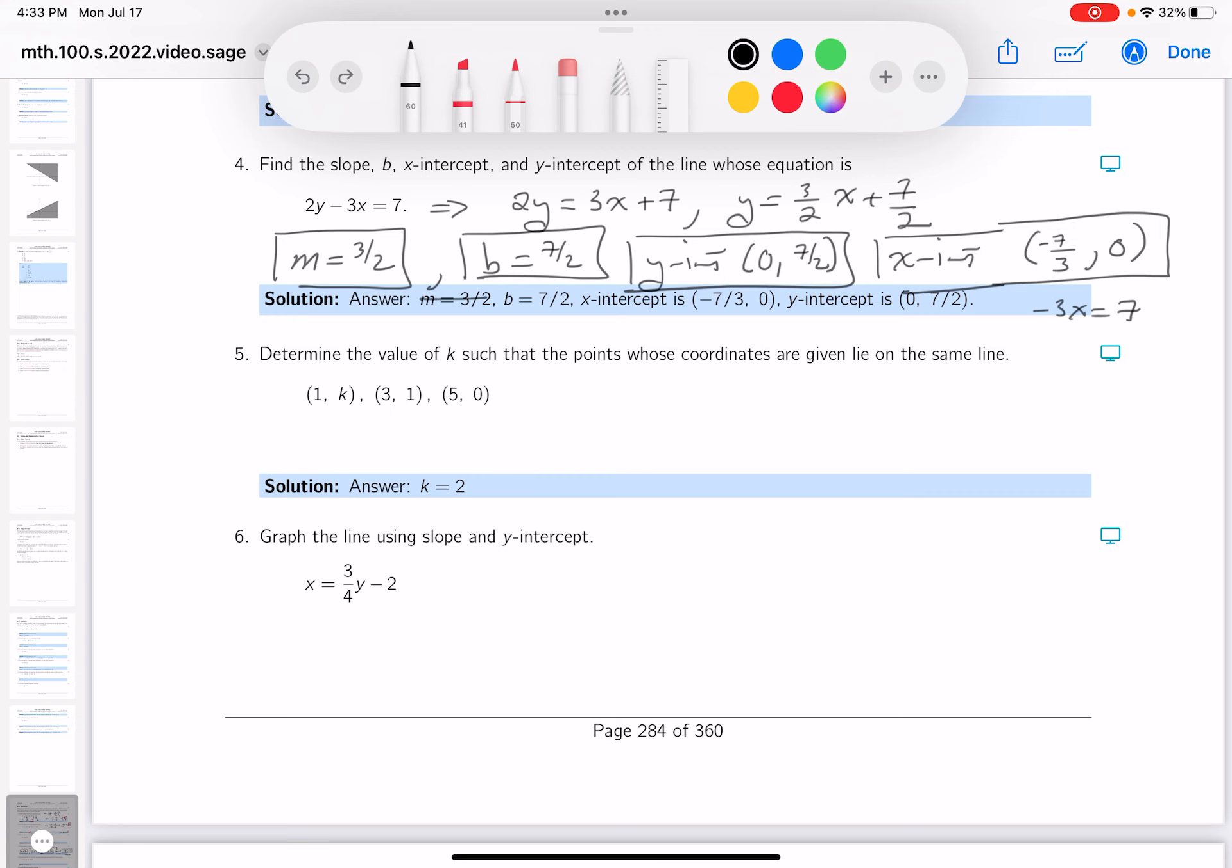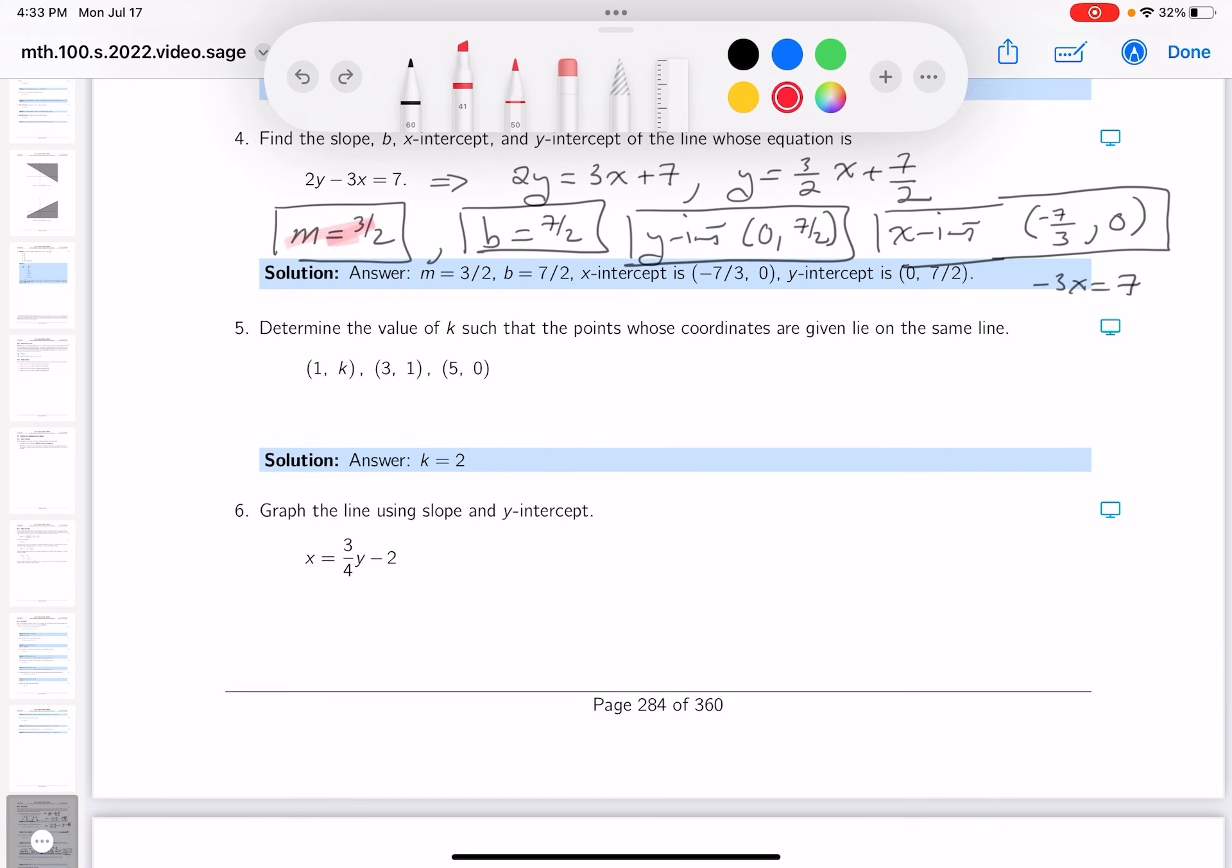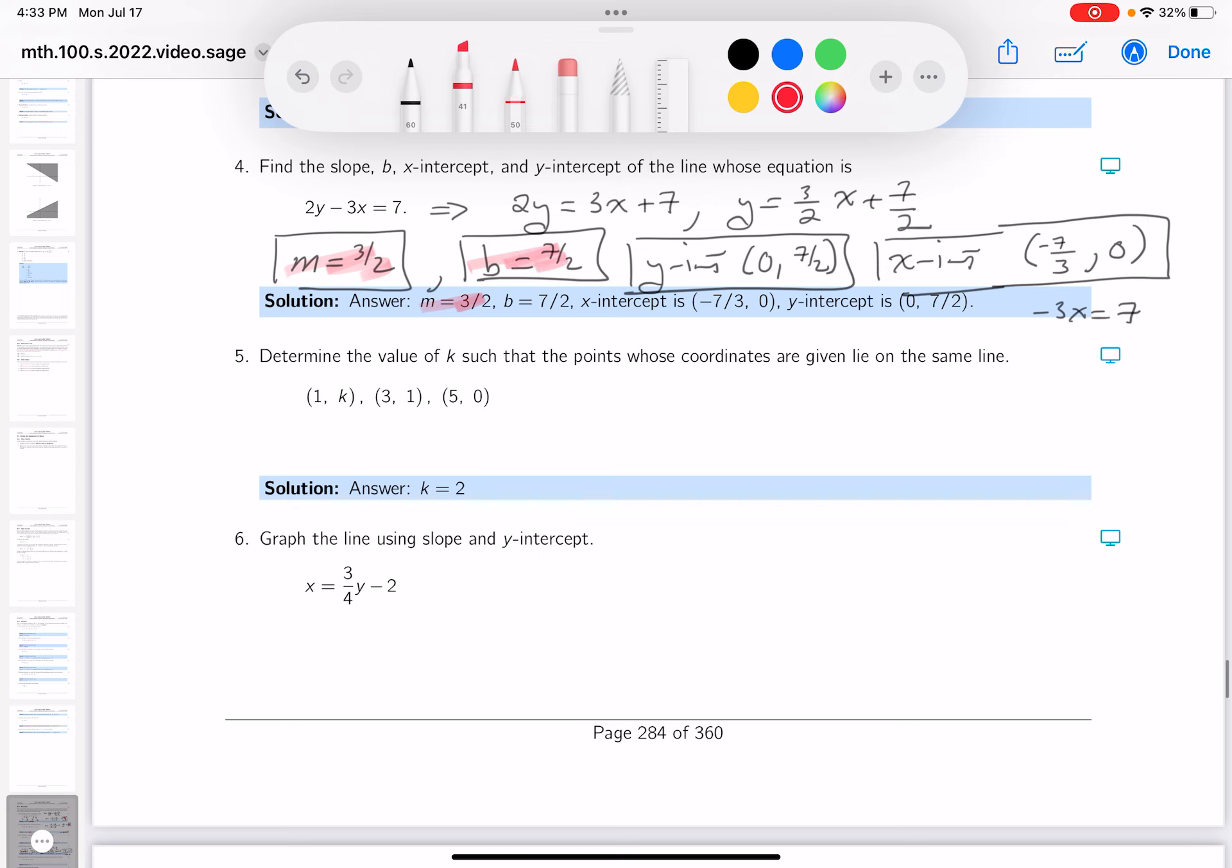b is 7 halves, looks good. x-intercept looking good, and y-intercept looking good. Time to get the next question.